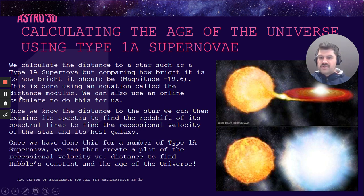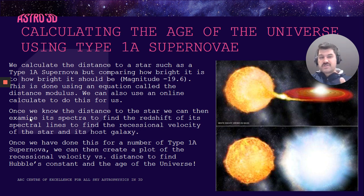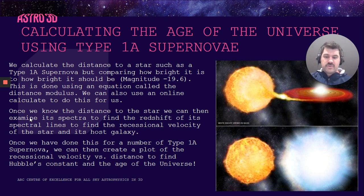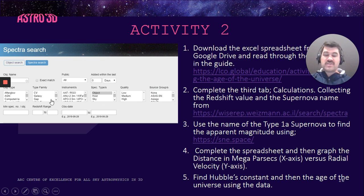The equation we use is called the distance modulus, though today we'll use an online calculator to do this for us. Once we know the distance to the star, we can examine its spectral lines to find the redshift and use that to find the recessional velocity. Now we have both the distance and the recessional velocity, and plotting these on a graph lets us work out Hubble's constant. From Hubble's constant, we can also find the age of the universe. We'll go to a website and collect data on supernova events captured by a telescope at Siding Spring Observatory, using those Type 1A events to create our own Hubble diagram.